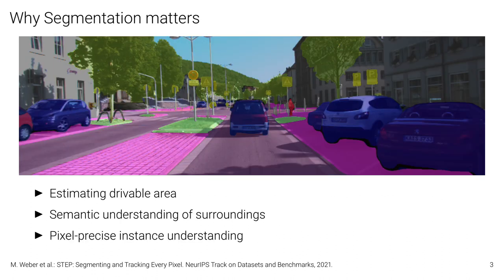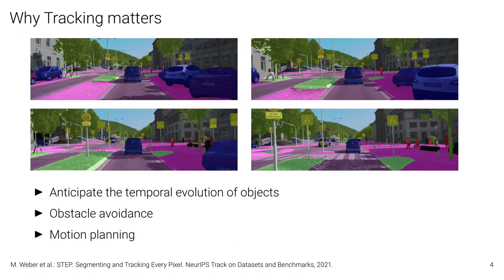So why does segmentation matter? For example, in an autonomous driving setting it's important to be able to estimate the drivable area. Moreover, the semantic understanding of all the surroundings is quite important, as well as the pixel-precise instance understanding. Of course, in such a scenario, tracking matters as well. It's important to anticipate the temporal evolution of objects to avoid any obstacles, or do tasks like motion planning or path finding.